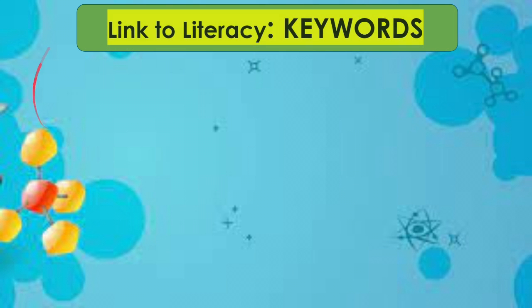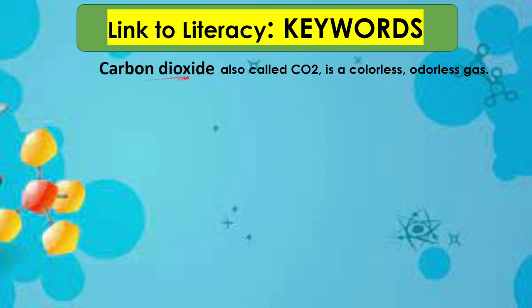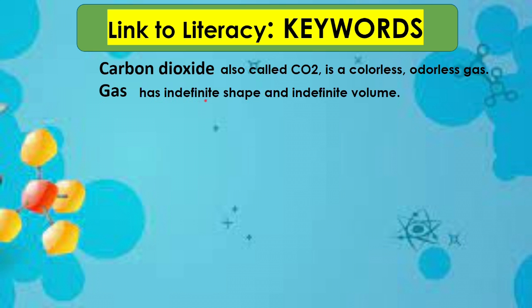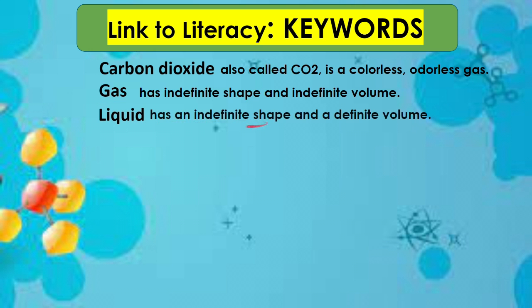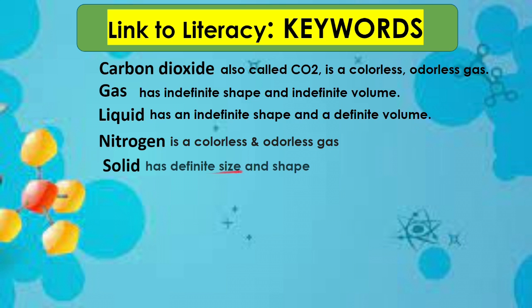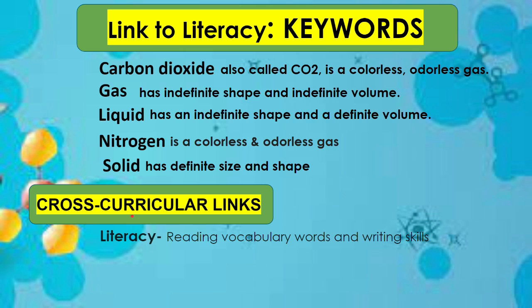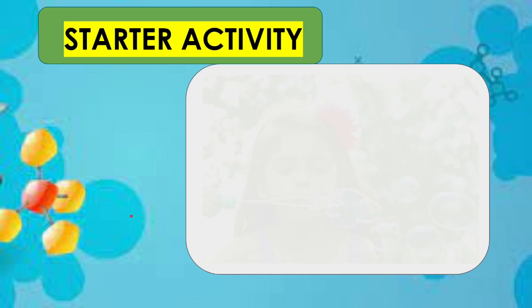Please check the useful links to help us understand more about mixing materials. Get your yellow notebook and a pen to write today's keywords. Carbon dioxide, also called CO2, is a colorless, odorless gas. Gas has indefinite shape and indefinite volume. Liquid has an indefinite shape and a definite volume. Nitrogen is also a colorless and odorless gas. Solid has definite size and shape.